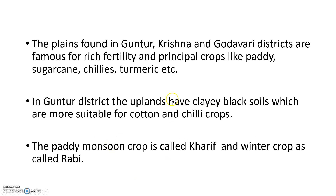The plains found in Guntur, Krishna, and Godavari districts are famous for rich fertility. Principal crops — meaning main crops — include paddy, sugarcane, chillies, and turmeric. In Guntur district, the uplands have clayey black soils which are more suitable for cotton and chilli crops.